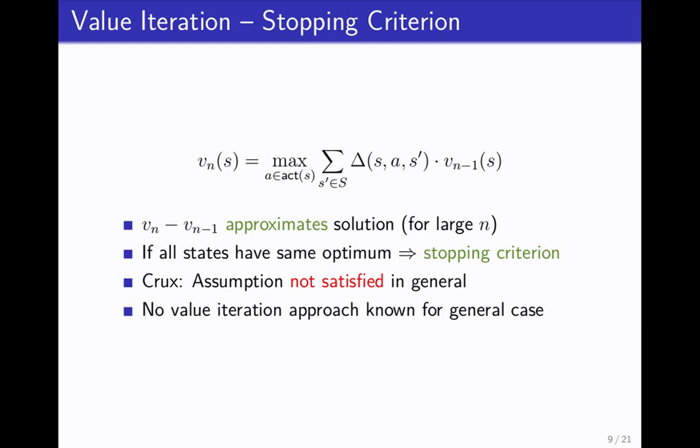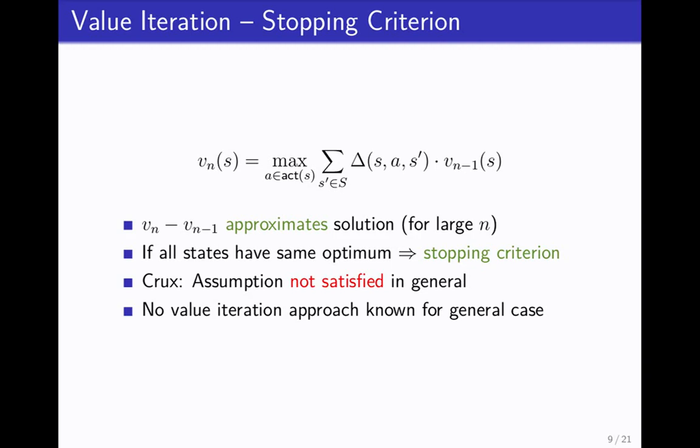There actually is another thing, a stopping criterion that makes this work. That basically tells you, I have these values and now I know that I'm maybe not exactly at the solution, but you're arbitrarily close. We can get an epsilon optimal solution from finite iteration. This is all known. And this known stopping criterion only works under the assumption that all the states in the MDP have the same optimal value. In general, this assumption doesn't hold. So this is also where the disproven conjecture comes in. There was a conjecture stopping criterion for the general case, but unfortunately it doesn't work. So we don't have a value iteration that solves this problem in the general case.